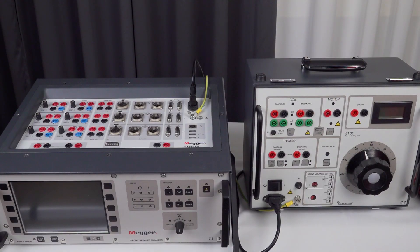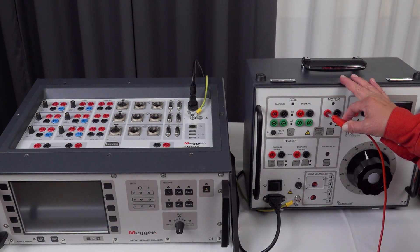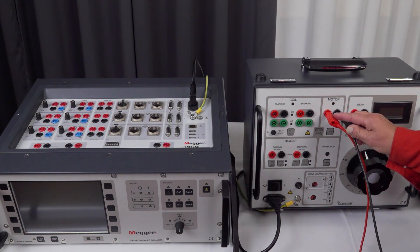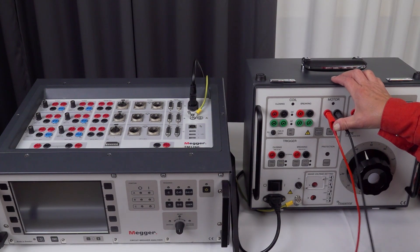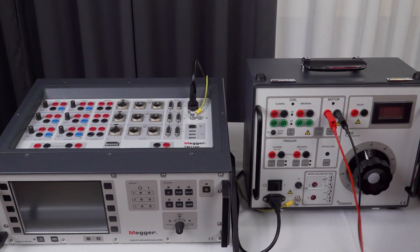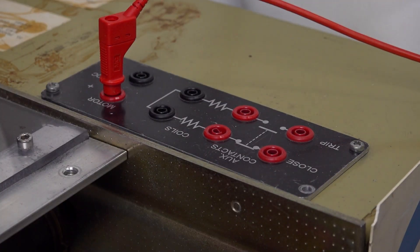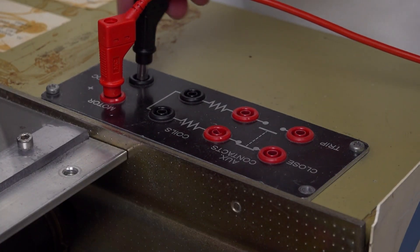I start with the connections. I'm going to connect the power supply to the motor, the plus and minus on B10E, plus and minus on the object.